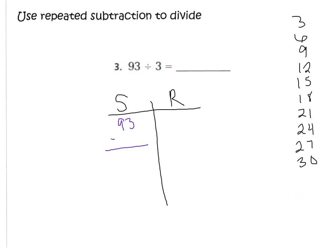You could keep going further, but I like to stop at 3 times 10. I need to find the biggest multiple of 3 I can subtract from 93. I see that 30 is my biggest multiple. So I'm going to subtract 30 from 93. Before I do that, I need to record how many groups of 3 that is — 10 groups, because 10 times 3 is 30. Now let's subtract: 3 minus 0 is 3, and 9 minus 3 is 6. That gives me 63.